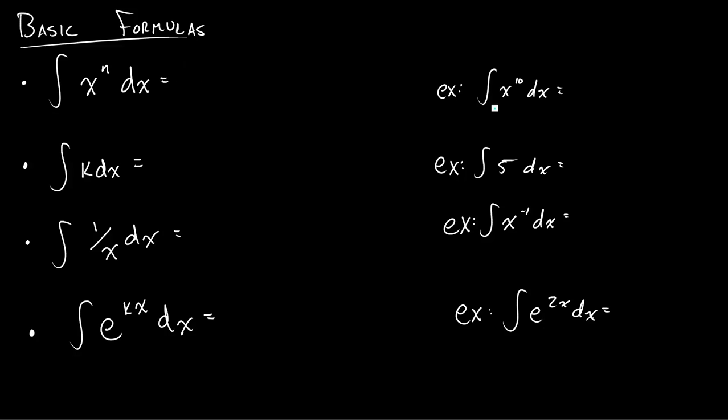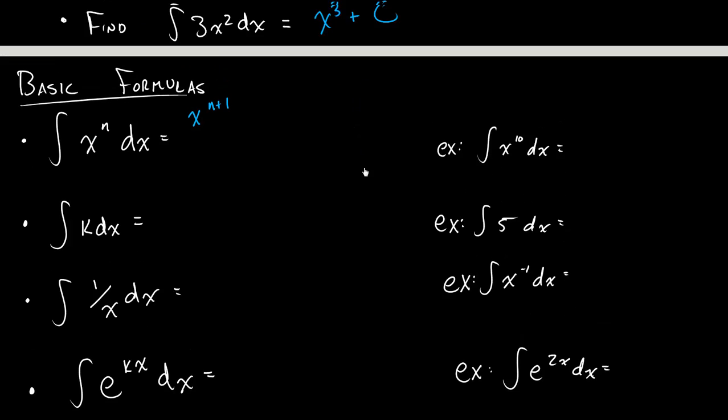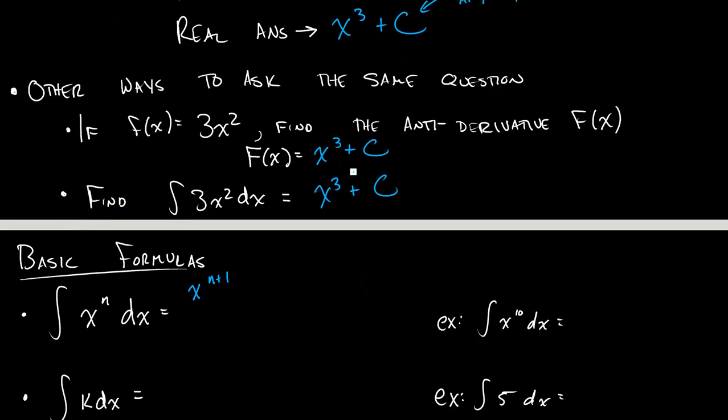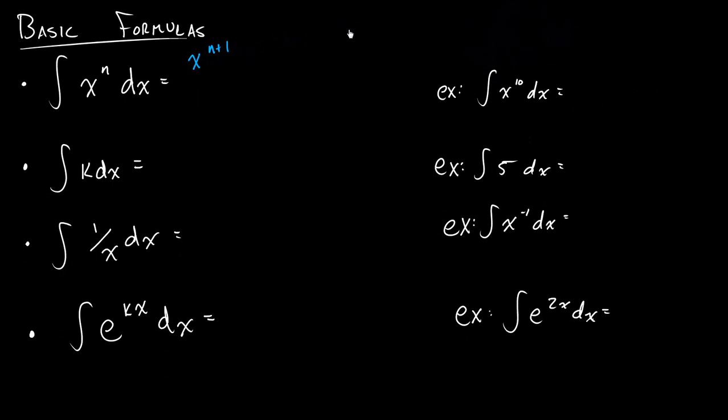So with x to the n, something like x¹⁰, our formula will be x^(n+1). So you increase the power by 1. But you're going to need to divide by n+1. We'll see why this happens in a little bit. We'll make sure to add that C. So here, our n is equal to 10. So by our formula, I'd have x¹¹ over 11, right? x^(n+1) over (n+1) plus C.